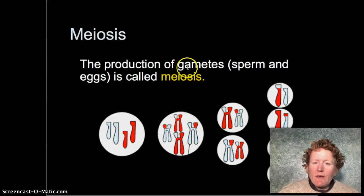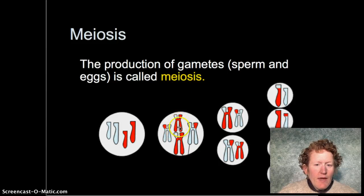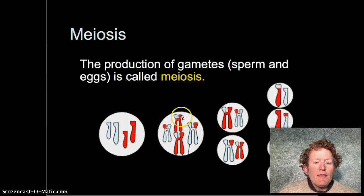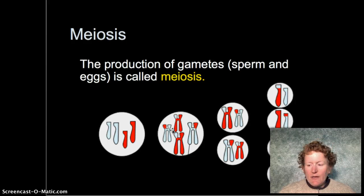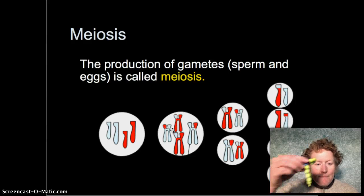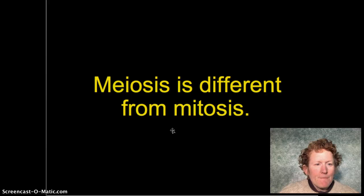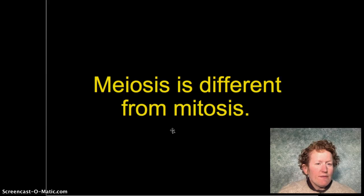The production of gametes — sperm and eggs — is called meiosis. One important thing to recognize: at the end of meiosis you don't get just two cells, you get four. Also, the two different copies of a chromosome — say chromosome one — are going to swap some information in a process called crossover, which we'll talk about in a bit. Crossover is what makes meiosis different from mitosis — it's one of the key differences.